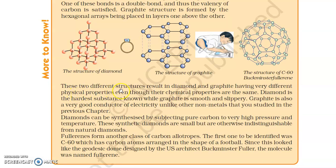Diamond and graphite have very different physical properties even though their chemical composition is the same. Diamond is the hardest substance known, while graphite is smooth and slippery. Graphite is also a very good conductor of electricity, unlike other non-metals studied in the previous chapter.